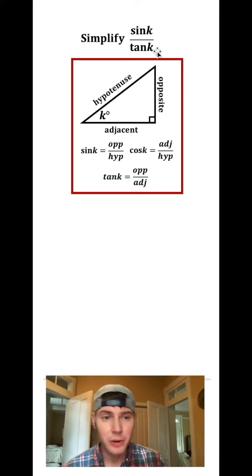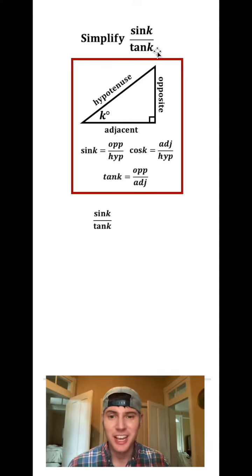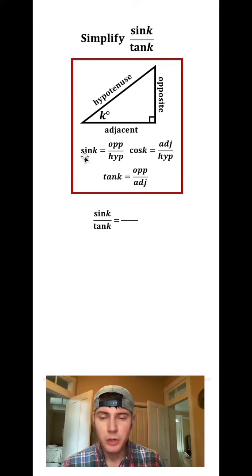So now let's copy down our original rational expression, the sin k over tan k. In the place of sine of k, we're going to plug in opposite over hypotenuse. Tan of k, we're going to plug in opposite over adjacent.